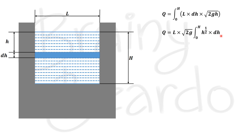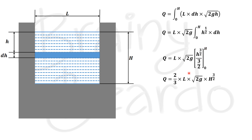We know that the integration of x to the power n is x to the power n+1 divided by n+1. Solving this equation, Q equals L into root of 2g, and since 1/2 plus 1 equals 3/2, we get h to the power of 3/2 divided by 3/2, evaluated within the limits 0 to H. Substituting the limits, we get Q equals 2/3 into L into root of 2g into H to the power of 3/2.